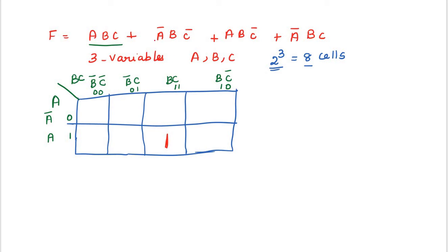We place 1s in the cells corresponding to: ABC (A=1, BC), A'BC' (A=0, BC'), AB'C' ... Now I have to combine these four cells together. I can combine these four cells together. To minimize: checking for common terms — the common term is B. For both groupings, B is common. So F = B.